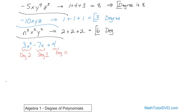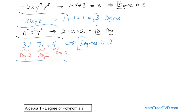So now you just look at each of these terms and see which one is biggest. The degree of 2 is the largest, so for the entire polynomial the degree is 2. That's how you handle it if you have multiple terms — you just look at each one individually and go from there.